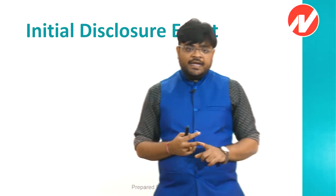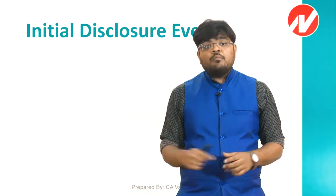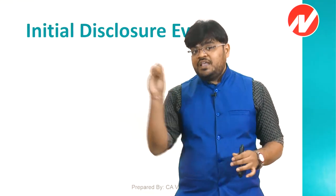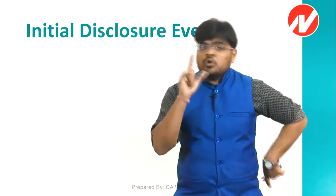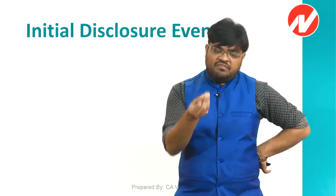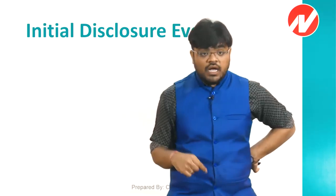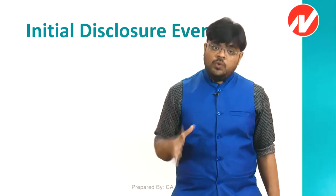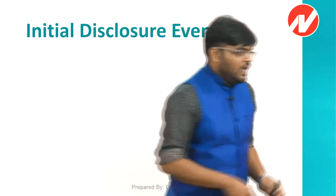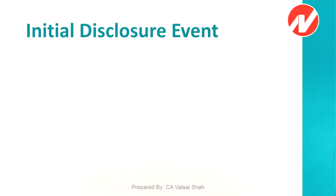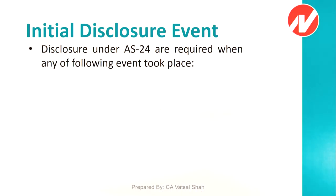Continuing the example: if identified on 1st January 2018 but sale completes on 5th April 2018, then at 31st March 2018 you must still show it — it has not yet been sold. And at 31st March 2019, yes, you must disclose it — because for the first 5 days of April it was still discontinuing. So disclosure is required until the discontinuance is completed.